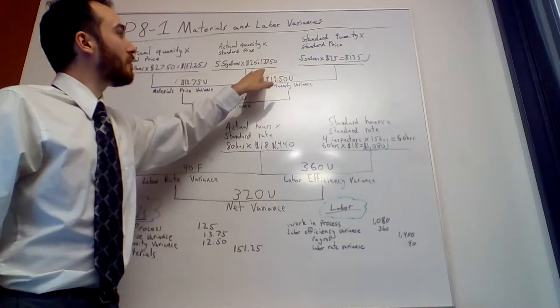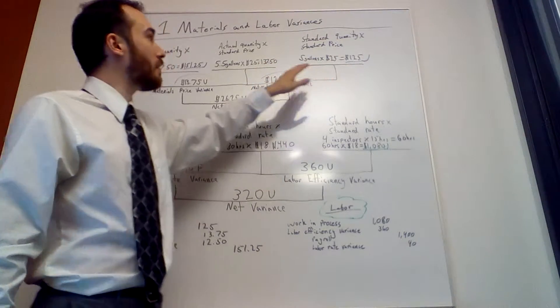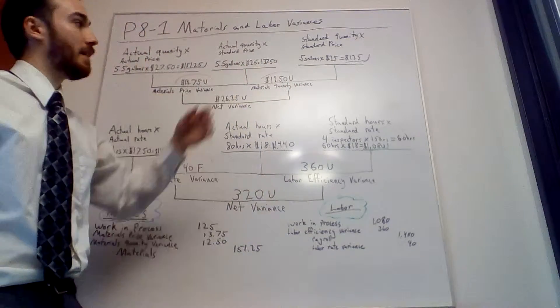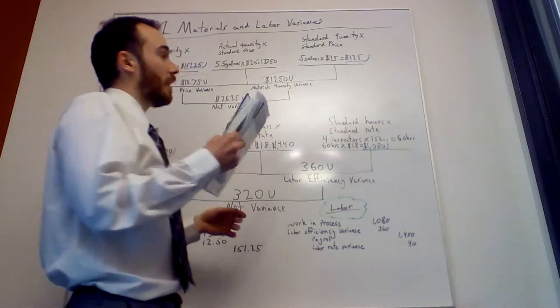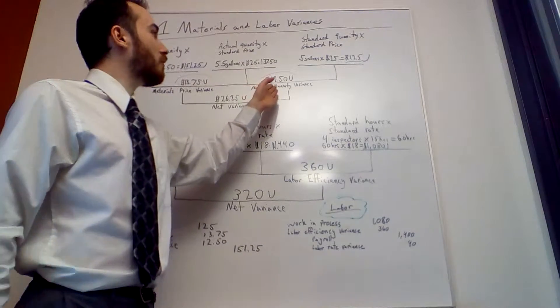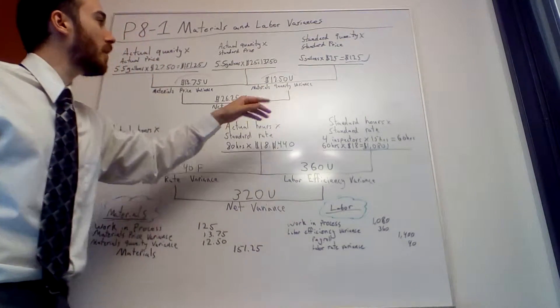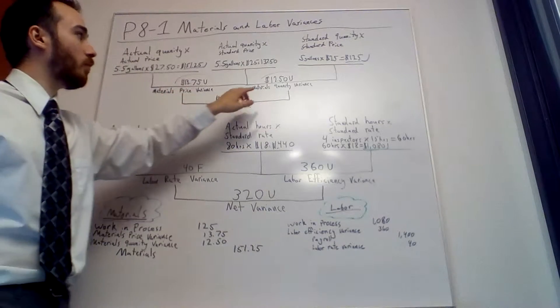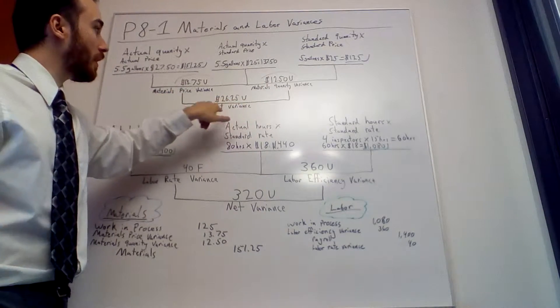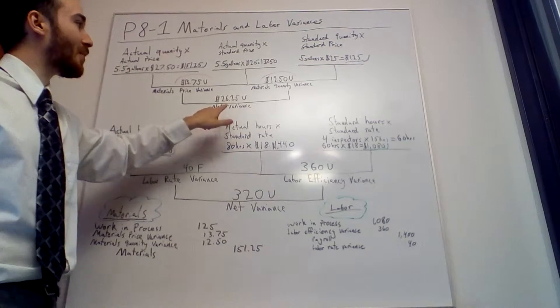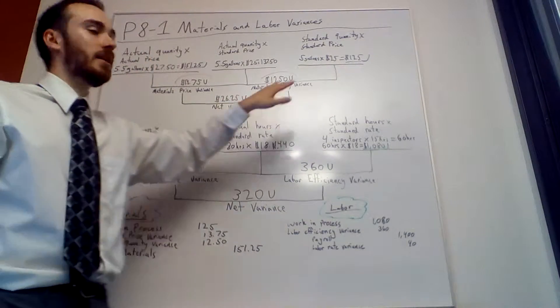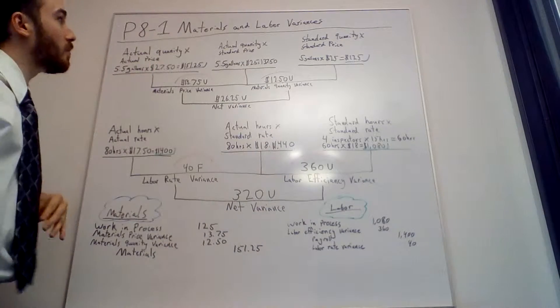$137.50 minus $125 gives us $12.50 unfavorable for materials quantity variance. Whenever the left is bigger than the right, it's unfavorable. If the right was bigger, it's favorable. When both are unfavorable, you add them up. Your net variance is $26.25 unfavorable. We actually spent more money than we should have on materials.